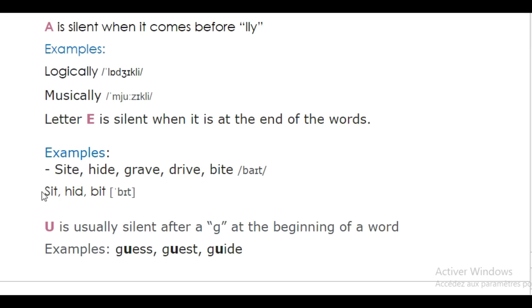So here is the difference: sit without an E, versus sight with an E. The vowel in the middle becomes long. For example: bite.